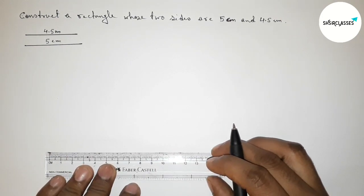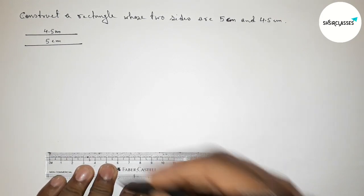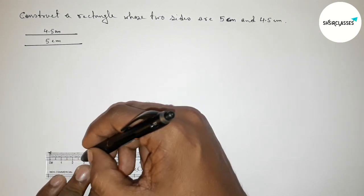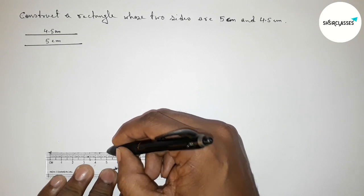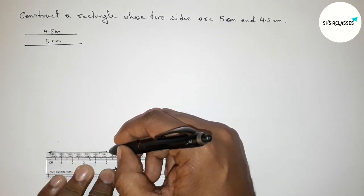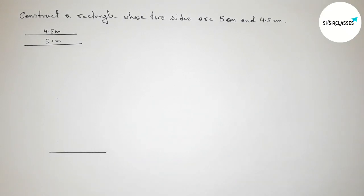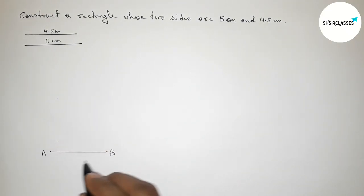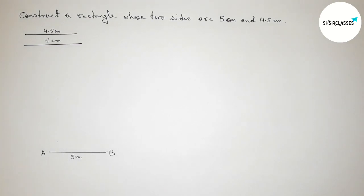Now we have to draw the base line segment of 5 centimeter. Starting from zero, this is 5 centimeter. Drawing a 5 centimeter line segment and taking point A here and point B here, so AB is 5 centimeter.